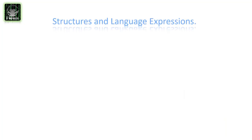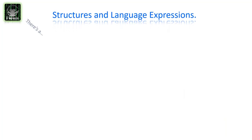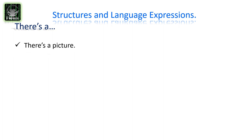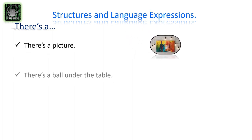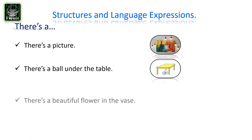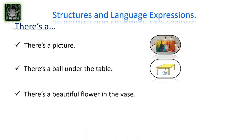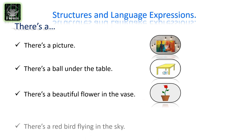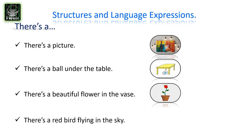Now let's read more examples using 'there's a': There's a picture on the wall. There's a ball under the table. There's a beautiful flower in the vase. There's a red bird flying in the sky.